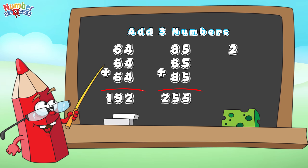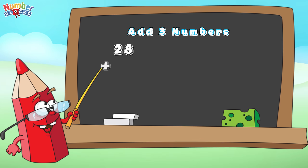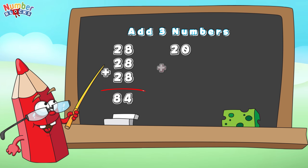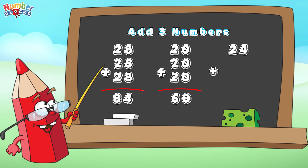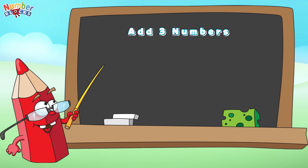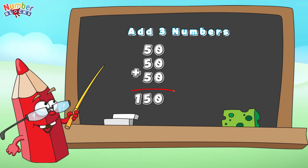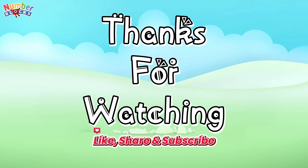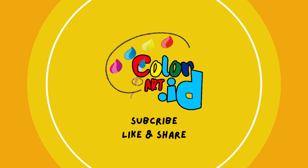29 plus 29 plus 29 is equals to 87. 28 plus 28 plus 28 is equals to 84. 20 plus 20 plus 20 is equals to 60. 24 plus 24 plus 24 is equals to 72. 50 plus 50 plus 50 is equals to 150. 26 plus 26 plus 26 is equals to 78. Thanks for watching — please like, share, and subscribe to my channel, Color Art ID.